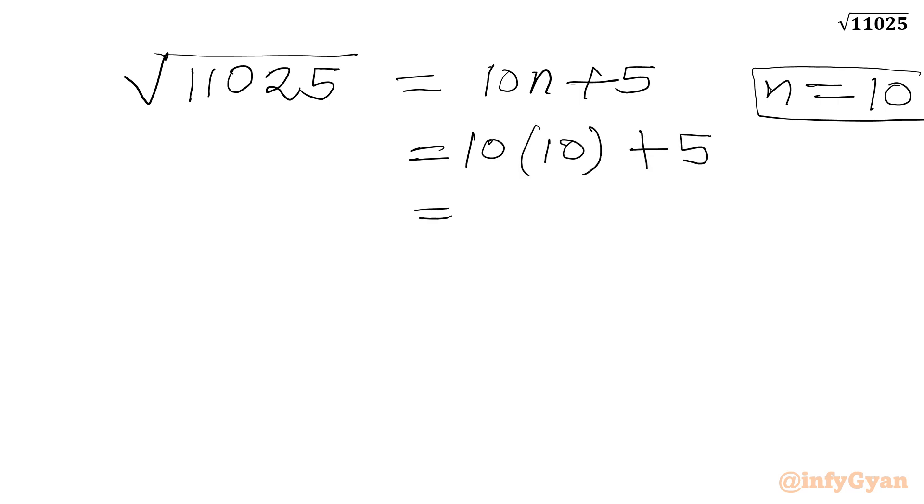So I can write square root of 11,025. This will be equal to 10n plus 5. Now n is equal to 10. So I will write 10 times 10 plus 5, which is equal to 100 plus 5. So our answer will become 105.